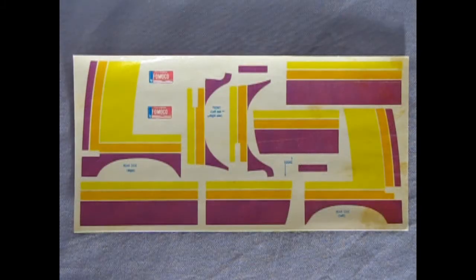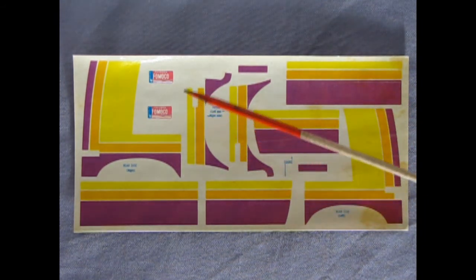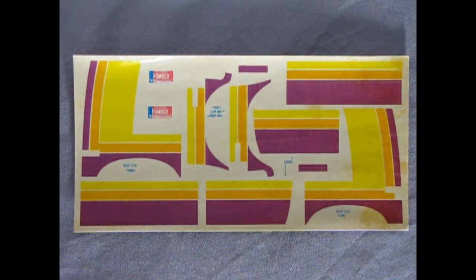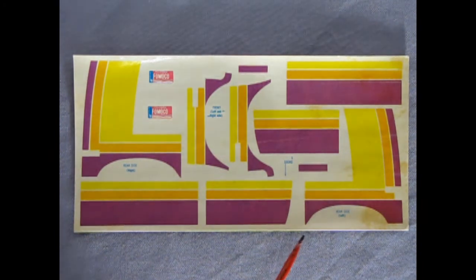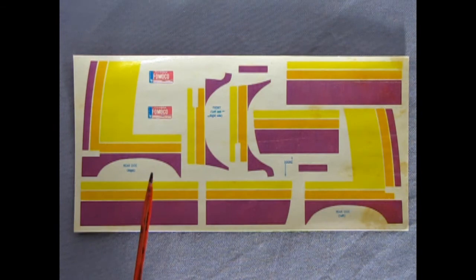Now the moment you've all been waiting for, the decal sheet and here you can see it is quite simple. We have that nice rainbow graphic going on here with those old Fomoco style dealer plates and that really is about it. Now this decal sheet is old and if you wanted to replace it I do believe round two might have some in their parts box.